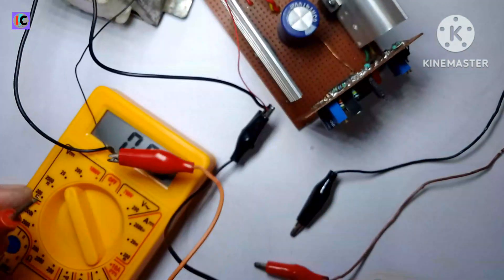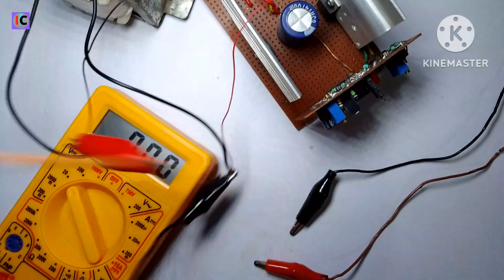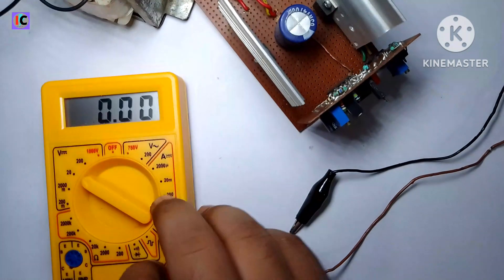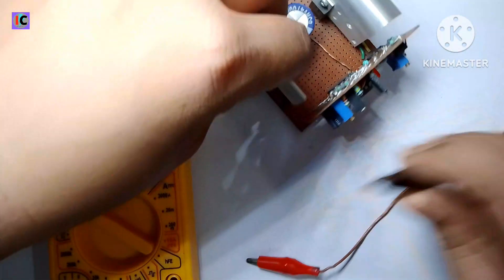Now at the output, I am going to connect the multimeter so that the output voltage will show on the multimeter. After this, I connect the 12 volt supply to the inverter.